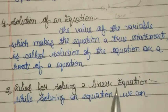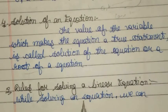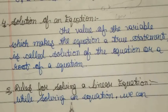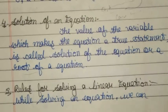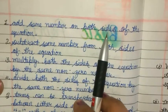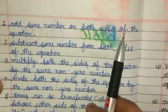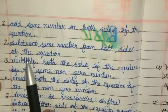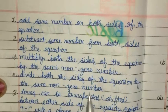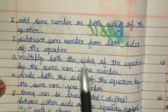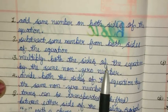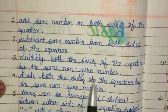Next is the rule for solving linear equations. While solving an equation, we can add the same number on both sides of the equation. We can also subtract the same number from both sides of the equation. We can multiply both sides of the equation by the same non-zero number.